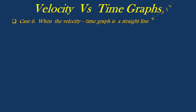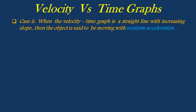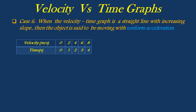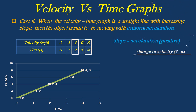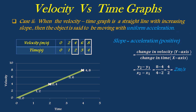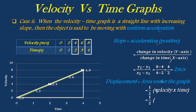When the velocity-time graph is a straight line with increasing slope, then the object is said to be moving with uniform acceleration. The following table shows velocity-time values obtained by an object moving along a straight path. By taking velocity on the y-axis and time on the x-axis, a graph is plotted. Slope gives acceleration = (y2 minus y1) divided by (x2 minus x1). Considering two points 4,2 and 8,4 from the graph, we get acceleration of 2 meter per second square. Displacement is obtained from the area under the graph — the area is in the shape of a triangle, so area = half × base × height = half × velocity × time, giving displacement of 16 meters.